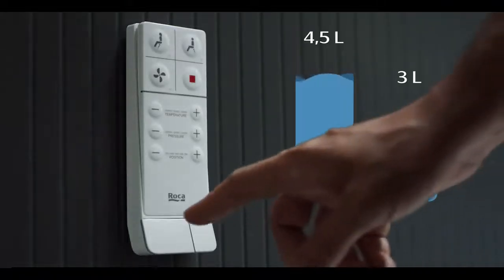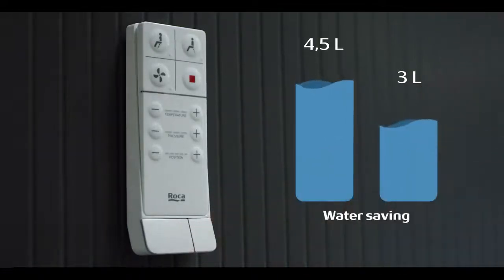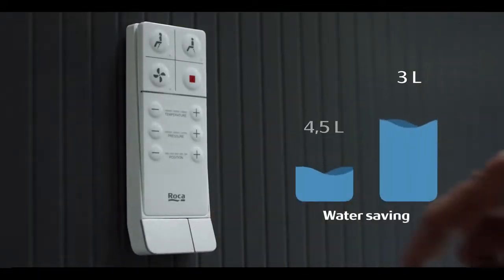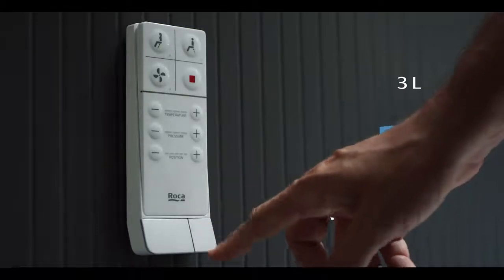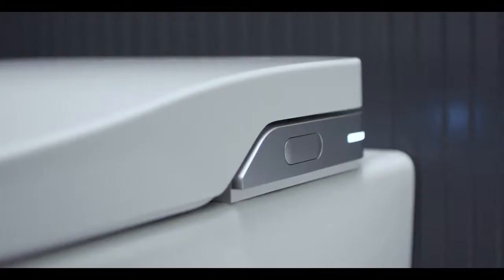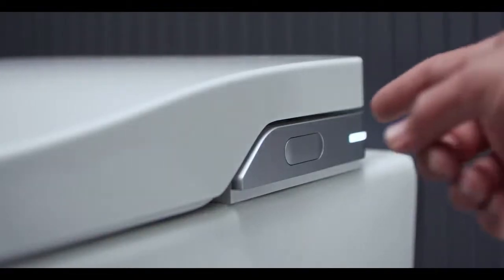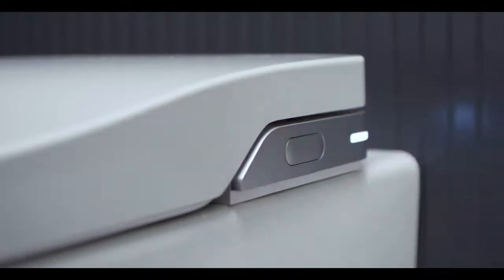The flush can be activated from the remote control holder, either using 4.5 or only 3 liters of water. Quantities that guarantee water saving, making Inwash in-tank a very sustainable product. The full flush can also be activated from the side panel of the toilet, which guarantees its operation even without electrical power.